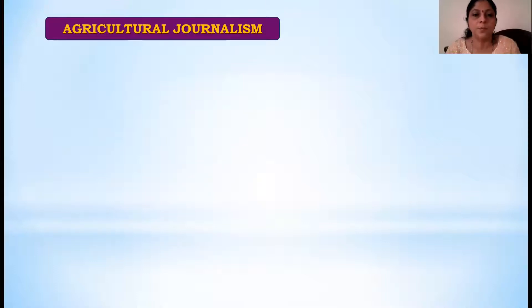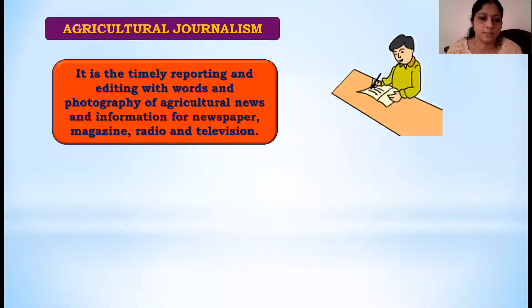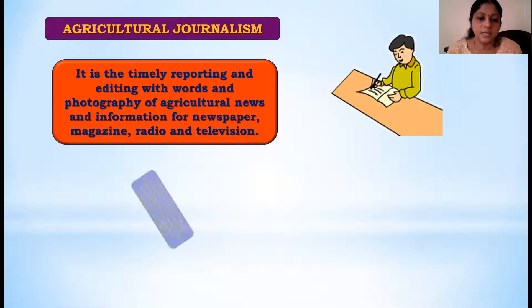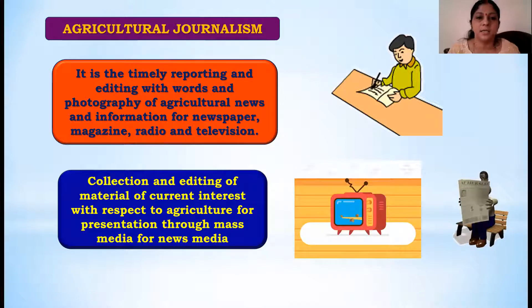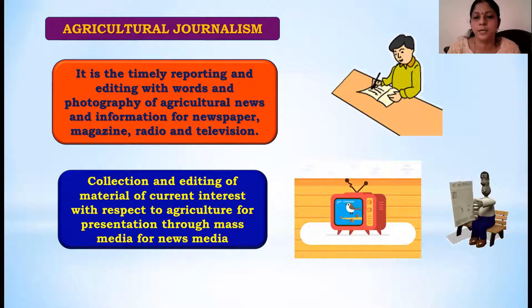Now we will come to the next topic. One of the subtopics in journalism is agriculture journalism, where information with respect to agriculture is given by the journalist. Agriculture journalism is the timely reporting and editing of words and photographs of agricultural news and information for newspapers, magazines, radio, and television. In short, it is the collection and editing of information of current interest with respect to agriculture for presentation through mass media - be it magazine, newspaper, radio, or television. So here we collect current agriculture information, edit it into a presentable form, and present it through different news media. This is what is called agriculture journalism.